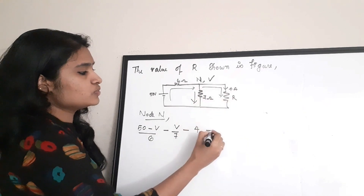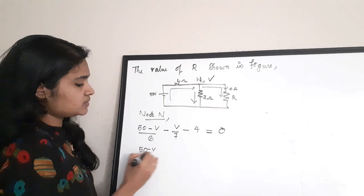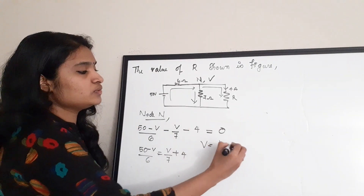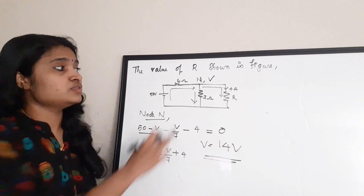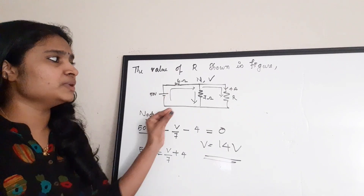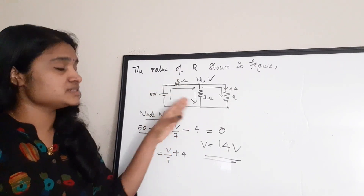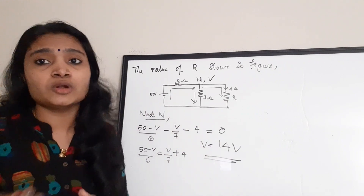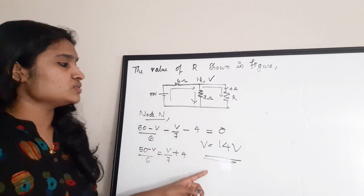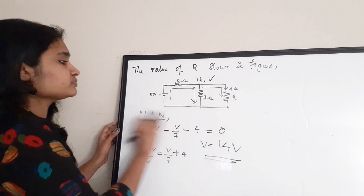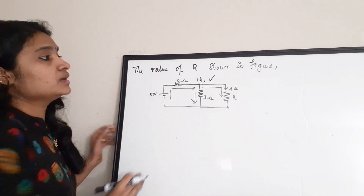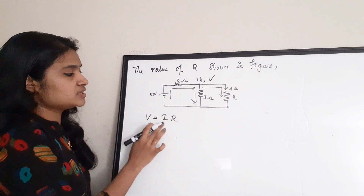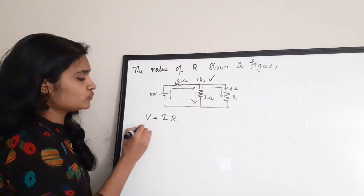From the nodal equation, (50 − V)/6 = V/7 + 4, solving gives V = 14 volts. That is the potential at node N. This is a simple nodal analysis question type; more complex circuits with nodal analysis can also appear. Anyway, the value of V obtained is 14 volts. For resistance R, the current through it is 4 ampere and the voltage is V, so using Ohm's law: V = I × R.